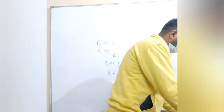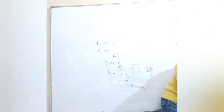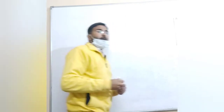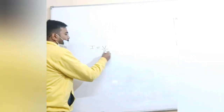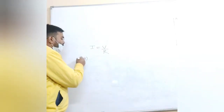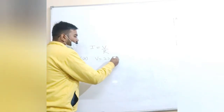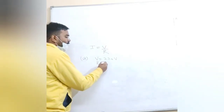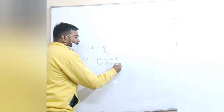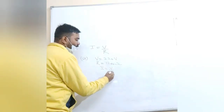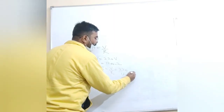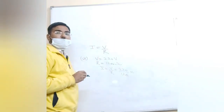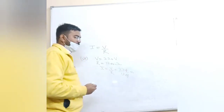So what do we do? I is equal to V by R. We have to calculate the current. For the bulb: I equals V by R, so 220 upon 1200.